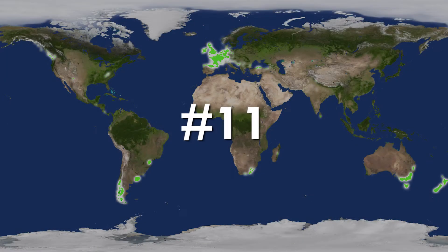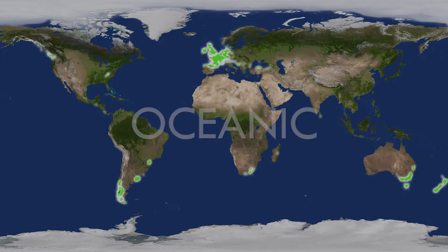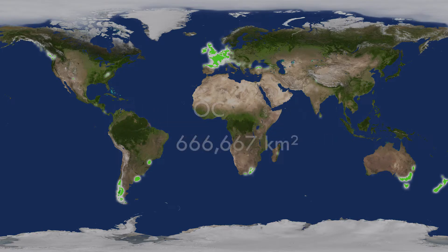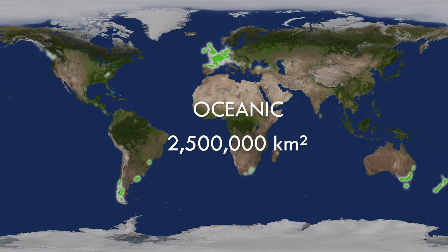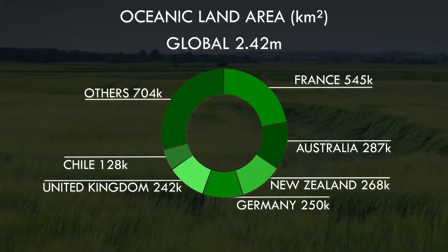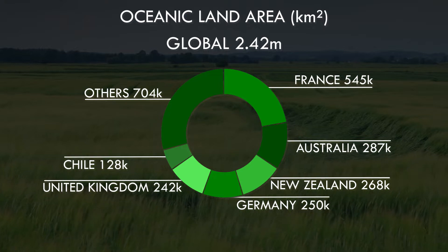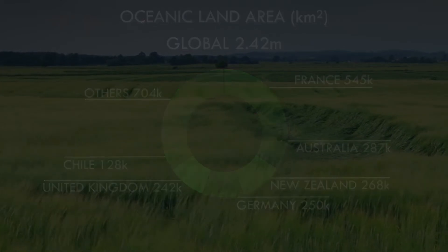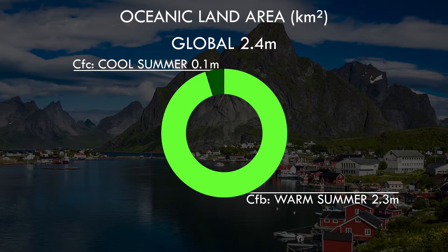At number 11, we have the next largest zone, that of the oceanic – the mild, wet climate found on the west coasts of the continents at temperate latitudes. Most of the land area is found in northwest Europe, with a significant proportion in Oceania. The main variant of warm summers dominates, with the cool summer subpolar variant restricted to rocky coasts in the far north and south.